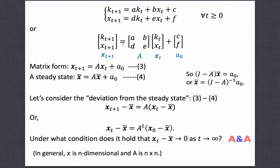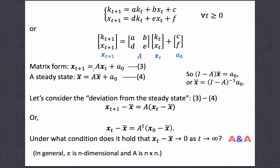The question is, in such a general case, how can we analyze the dynamics of the system? Do k and x converge or diverge? Let us introduce new notation. Let's denote the vector of k and x together by bold x, and let's denote the coefficient matrix a, b, d, e by capital A, and the constant vector c and f by A0.